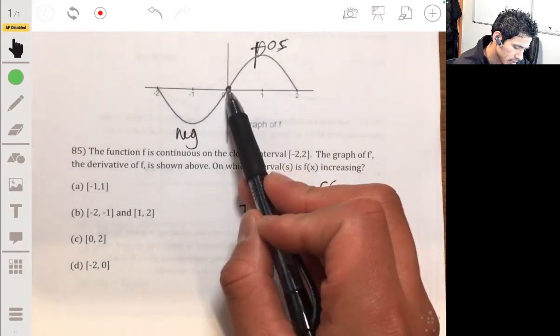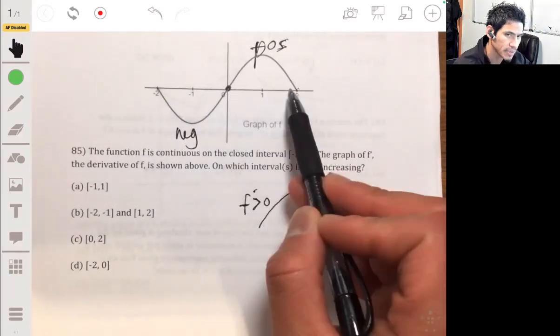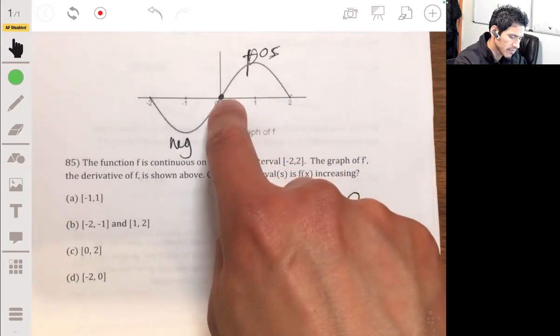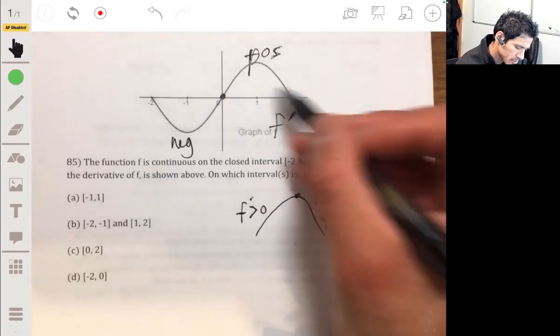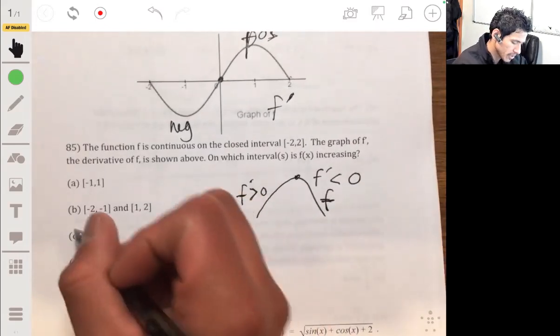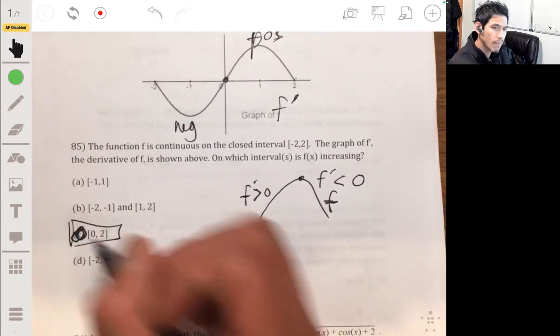So it's increasing from zero to two, all along here, because it's positive. Don't get fooled that it goes up and down. This is the actual derivative. So zero to two, so the answer will just be C.